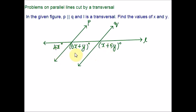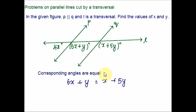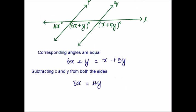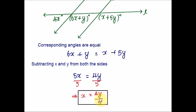Here is the next example. Lines P and Q are parallel and L is a transversal. Find the values of X and Y. We are given three angles. What is the relationship between 6X + Y and X + 5Y? They are in the same position for the two lines, so these are corresponding angles. Corresponding angles are equal, so we set 6X + Y = X + 5Y.